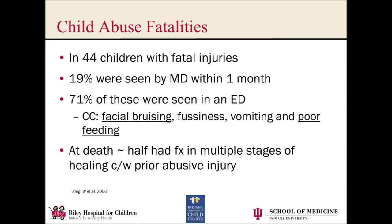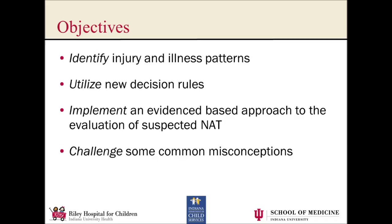For those reasons, we're going to spend some time today talking about how we can identify injury and illness patterns that should make us suspicious for inflicted injury in children. We'll utilize a few new decision rules that can help us with that process. We'll talk about what our ultimate evaluations need to look like when we suspect abuse in these kids, and we'll challenge some common misconceptions along the way.